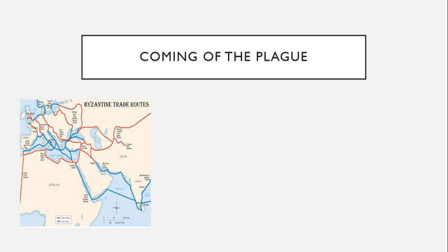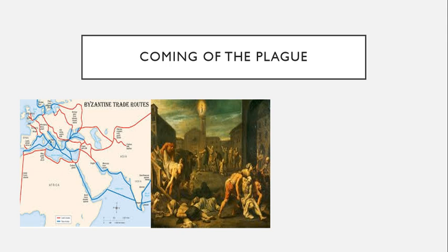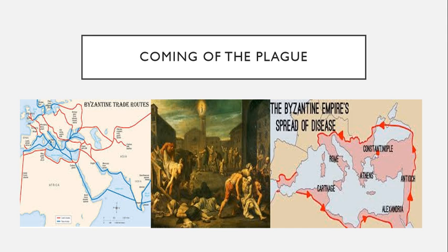Rats got into the grain supplies and were soon transported across the empire, carrying the disease with them. The disease first appeared in the city of Pelusium, located on the east bank of the Nile, and it spread in two directions: north to Alexandria and east to Palestine. Even worse, it took place in a time of war and famine, which caused both soldiers and refugees to be on the move, serving as plague carriers.